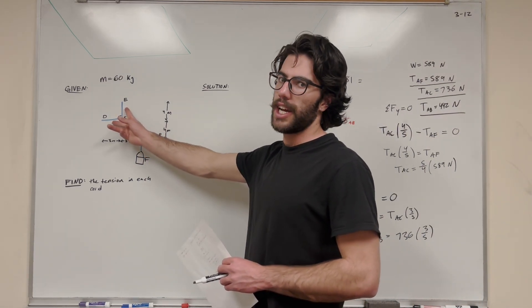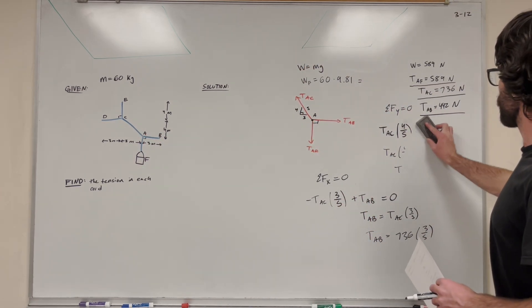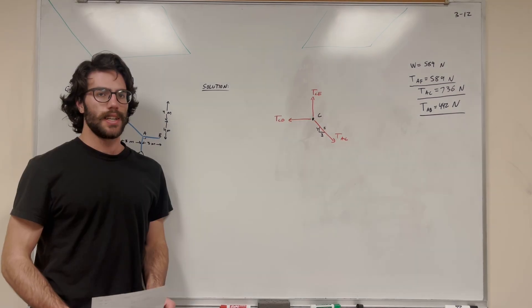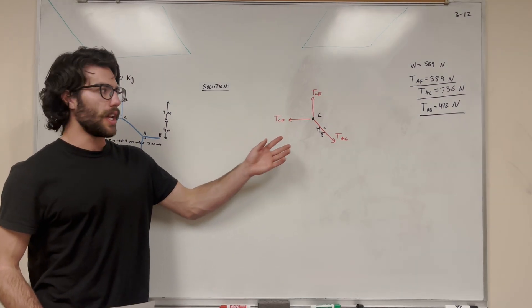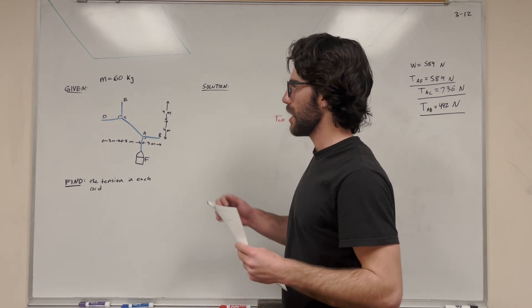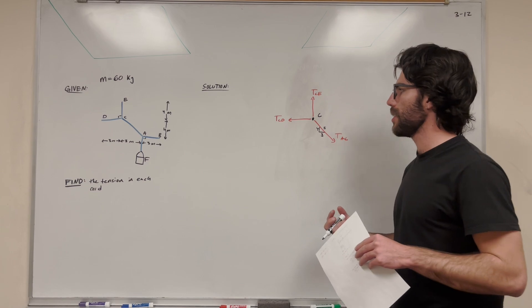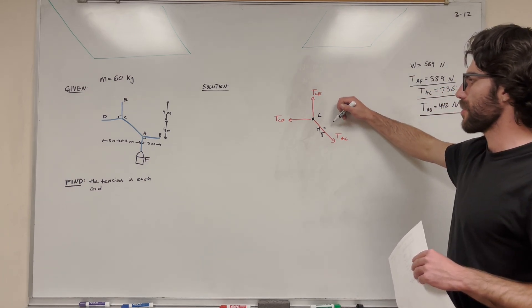Now we just need to find these two tensions. So to do that, we need to draw another free body diagram. So I'm going to go ahead and clean up the board here so we can work on that second part. All right, so we're back. So we got this new free body diagram. I went ahead and just drew what's happening at C. Now I chose C because it's the interaction of all three of these forces here.